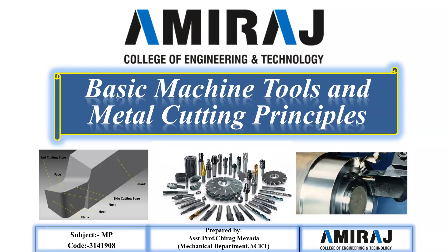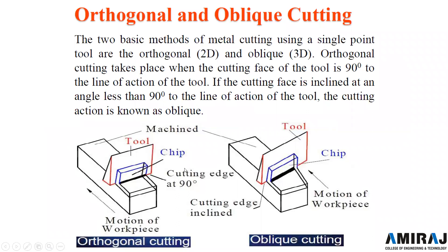Hello everyone, welcome back. In the previous lecture I explained about the thickness ratio in the cutting tool and about orthogonal and oblique cutting. The two basic methods of metal cutting using a single point cutting tool are orthogonal and oblique. Orthogonal cutting is two-dimensional (2D) while oblique cutting is three-dimensional (3D).